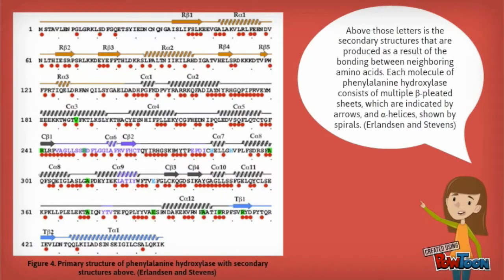Each molecule of phenylalanine hydroxylase consists of multiple beta-pleated sheets, which are indicated by arrows, and alpha helices, which are shown by spirals.